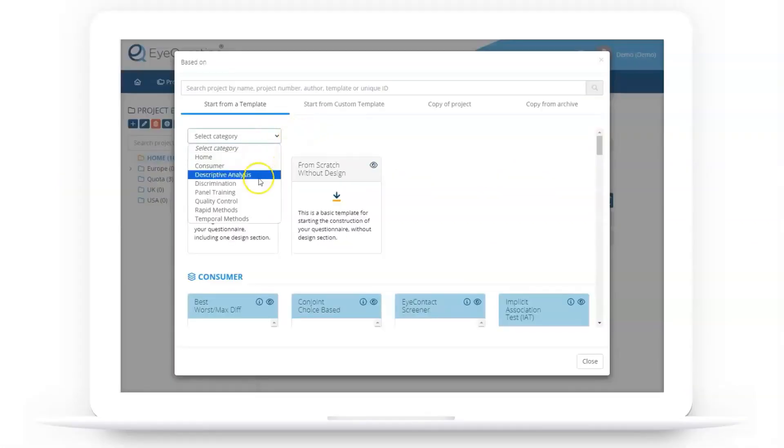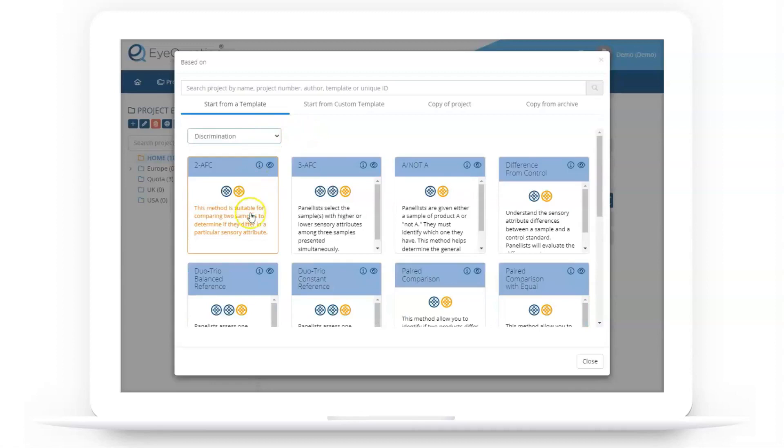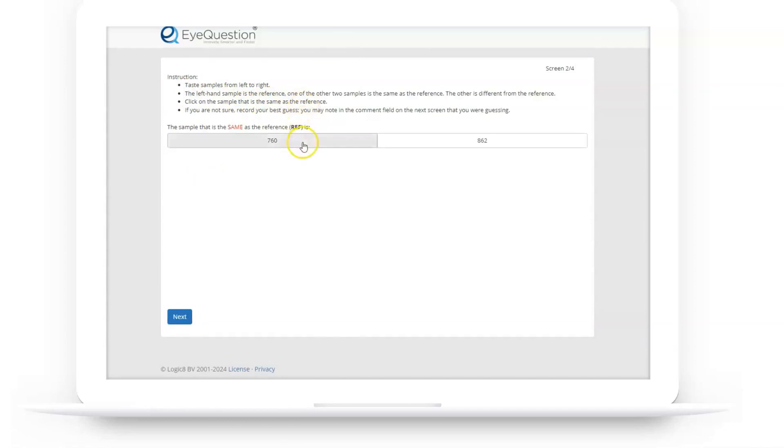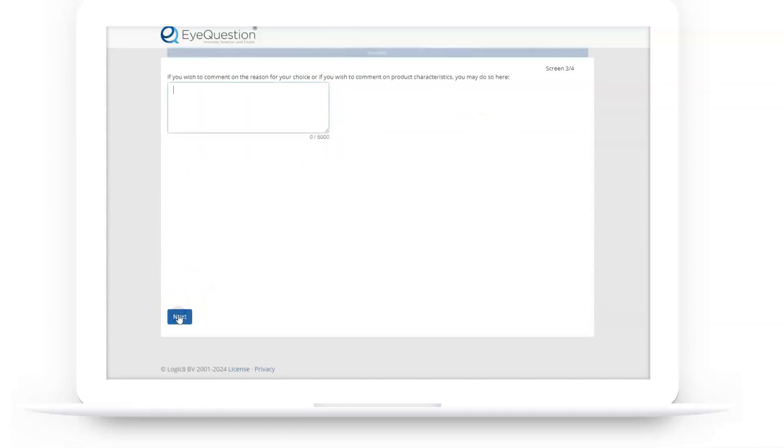In iQuestion, you can effortlessly select a pre-configured Duo Trio questionnaire using one of the templates provided. The questionnaire comes complete with instructions and the correct question for panelists to identify the sample similar to the reference.